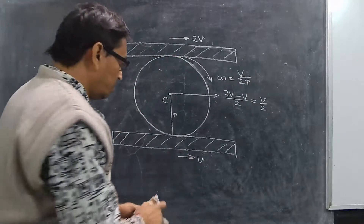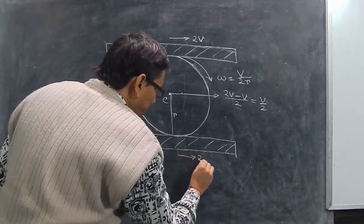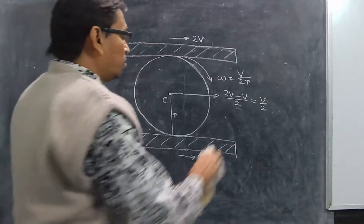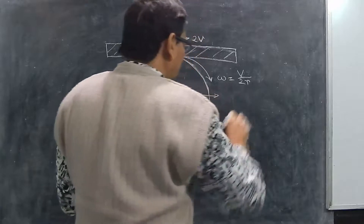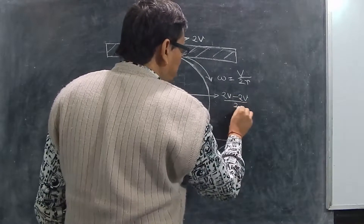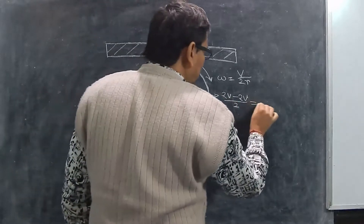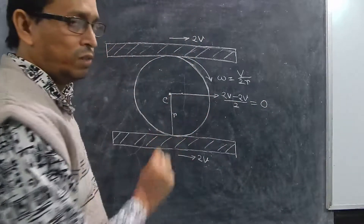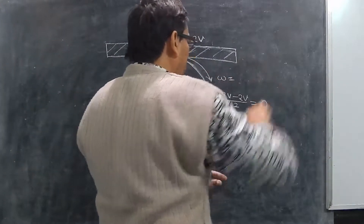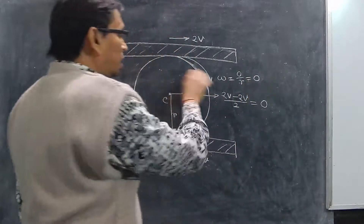Suppose now both planks are moving with velocity 2V. The relative velocity is 2V minus 2V divided by 2. That means 2V minus 2V gives 0, so 0 by 2 is 0. That means the center of mass has 0 velocity with respect to these two frames, so omega will eventually be 0, because 0 by R is equal to 0.